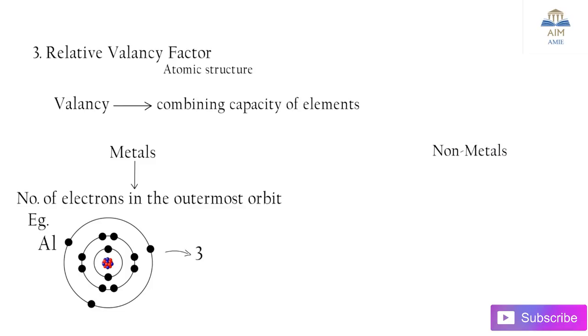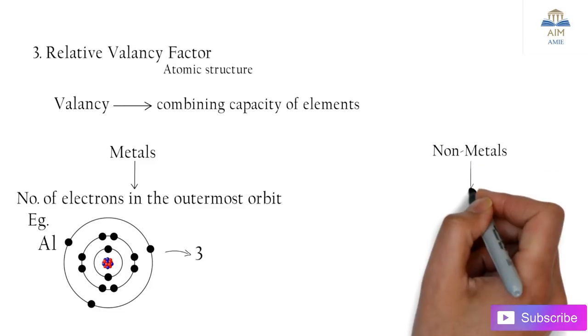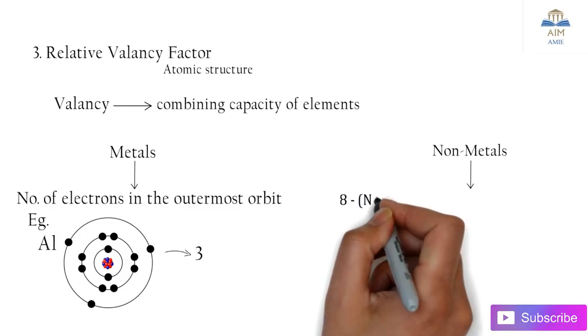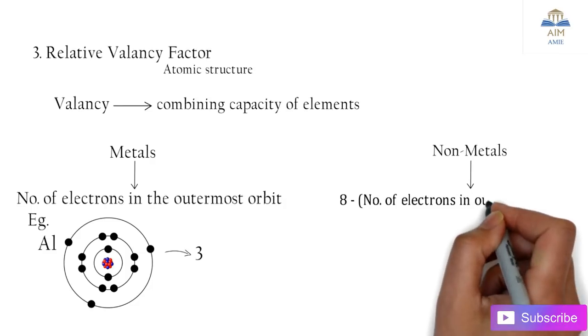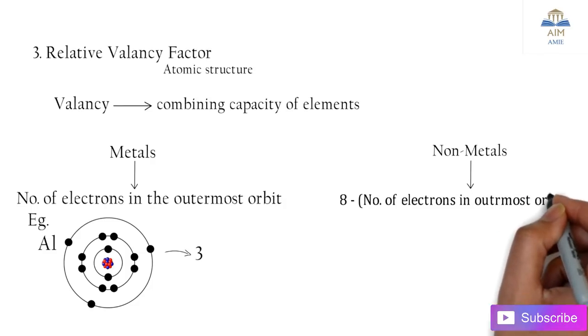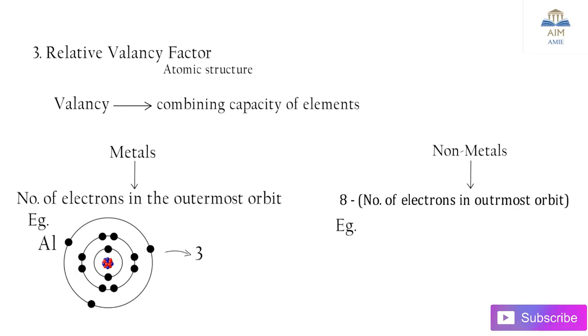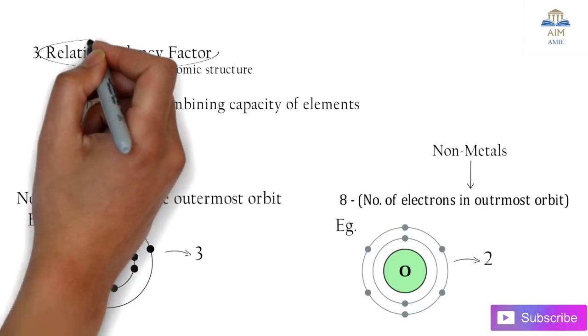In case of nonmetals, it's different. It is 8 minus the number of electrons in the outermost orbit. That is the formula for calculating valency in case of nonmetals. Let's take oxygen atom. It has 2+6 electrons in the outermost orbit. So 8 minus 6 equals 2. The valency of nonmetal oxygen is 2.